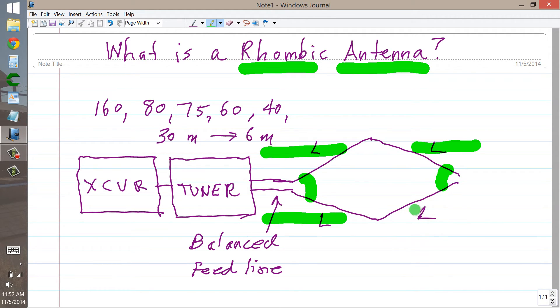this major lobe, and this major lobe, all conspire and reinforce each other to form a massive bi-directional pattern like this that goes the long way along the rhombus. You'll get a pretty close to a true bi-directional pattern this way.